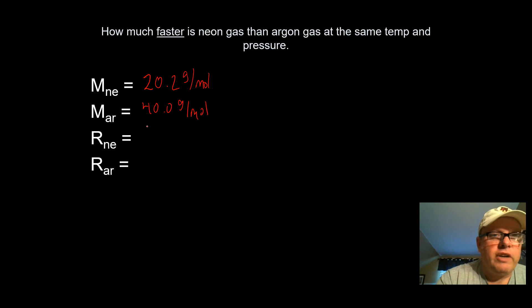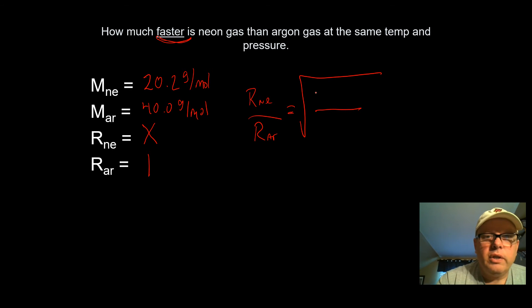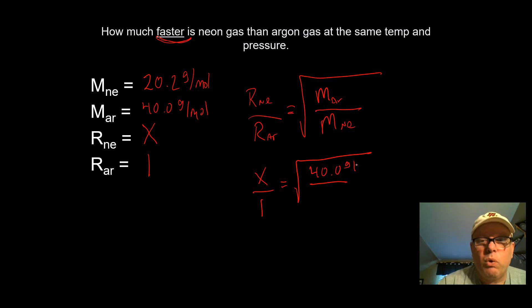Okay. The rate of neon is what we're trying to figure out here, how much faster it is. So we're going to set that to our X. And the rate of argon we're going to set it to 1. This is simply going to be a comparison of the two rates because we want to know how much faster neon is than argon. So now that I've got everything, I'm going to put the rate of neon over the rate of argon, and I'm going to set that equal to the square root of the mass of argon over the mass of neon here. Then I'm simply going to put in my values where I have X, which is the rate of neon, over 1, which is the rate of argon, is equal to the square root of the mass of argon, which is 40.0 grams per mole, over the mass of argon, which is 20.2 grams per mole.